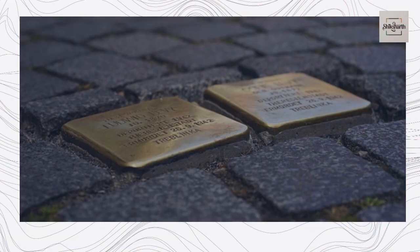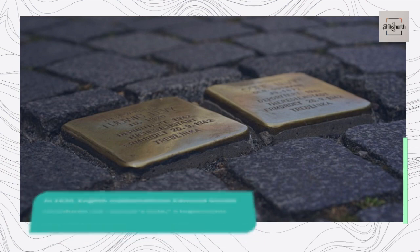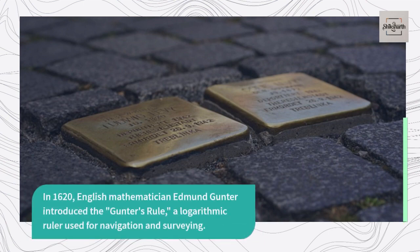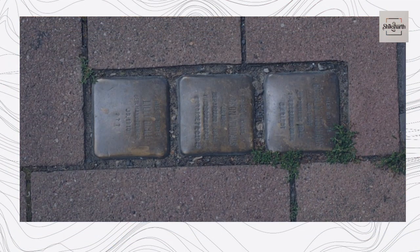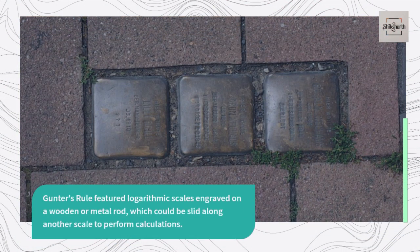In 1620, English mathematician Edmund Gunter introduced the Gunter's Rule, a logarithmic ruler used for navigation and surveying. Gunter's Rule featured logarithmic scales engraved on a wooden or metal rod, which could be slid along another scale to perform calculations.